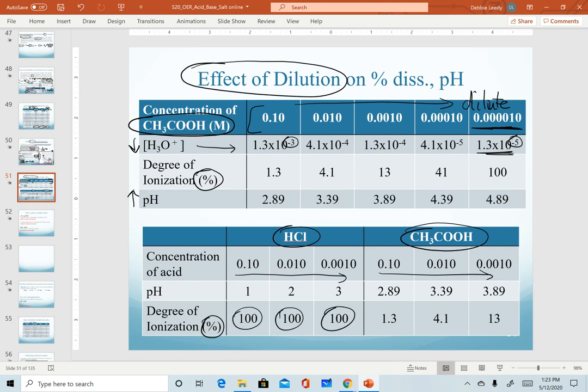Realize that the hundreds for HCl are all theoretical. In the real world, we would see a difference with a strong acid once we dilute. And for acetic acid, of course, we do see an increase in the percent ionization as we dilute.